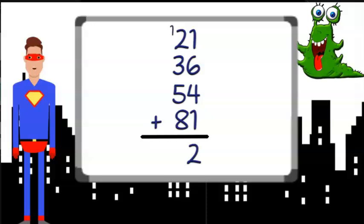Now let's add the tens digits. That gives us 2 plus 3 plus 5 plus 8 plus the one we regrouped. And that gives us a total of 19. So our answer is 192.